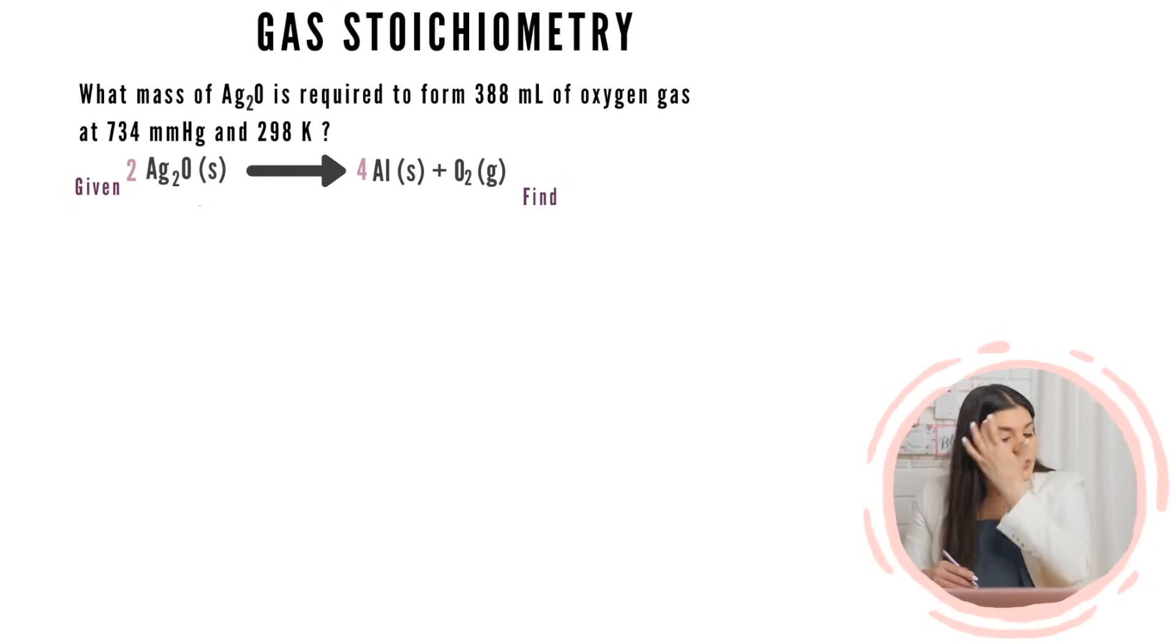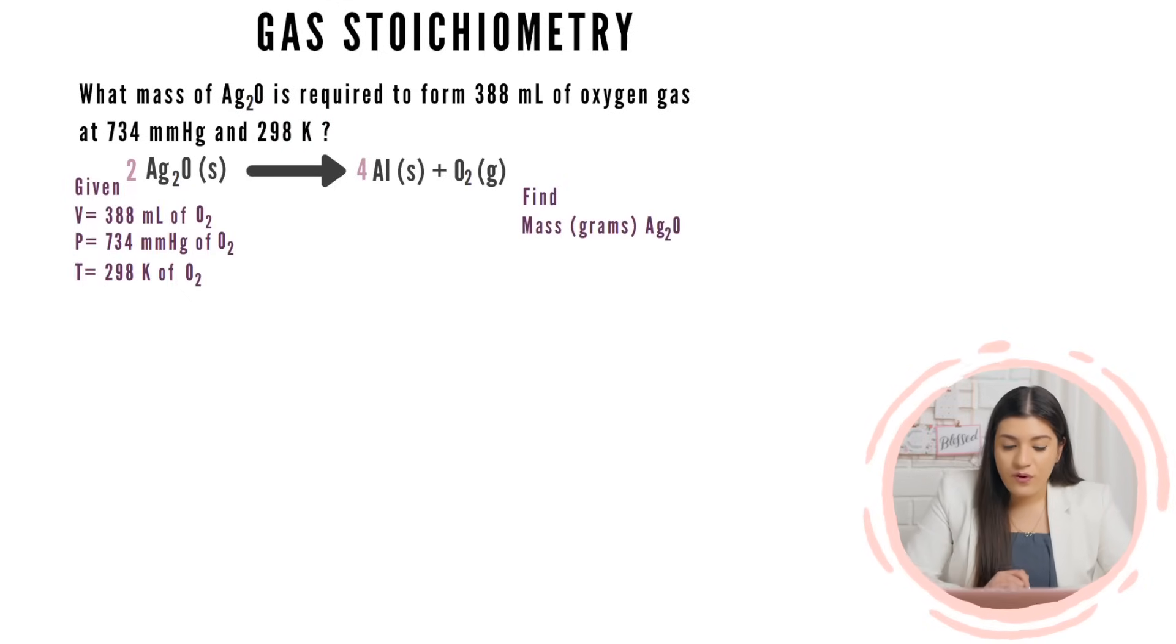So we'll do this one together. This says, what mass of silver oxide is required to form 388 mL of oxygen gas? And we know oxygen gas or oxygen is never by itself, meaning it's O2, not just O. And then next, we also are given our pressure and we're given our temperature. So I'm given all of these different things. Whenever you're looking at these questions, seriously, start off with what you're given. Literally say, okay, well, I know I'm given volume because milliliters or liters represents volume.